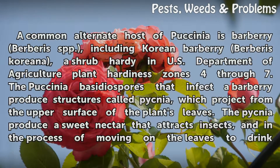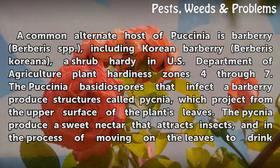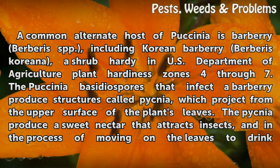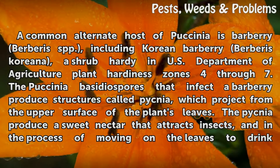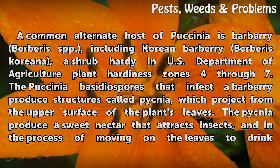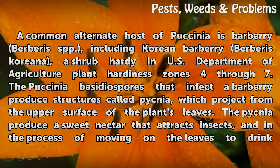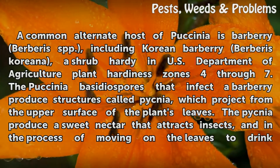A common alternate host of Vaxenia is Barbary Berberus SPP, including Korean Barbary Berberus Coriana, a shrub hardy in U.S. Department of Agriculture Plant Hardiness Zones 4-7. The Vaxenia basidium spores that infect a barberry produce structures called pyknea, which project from the upper surface of the plant's leaves.